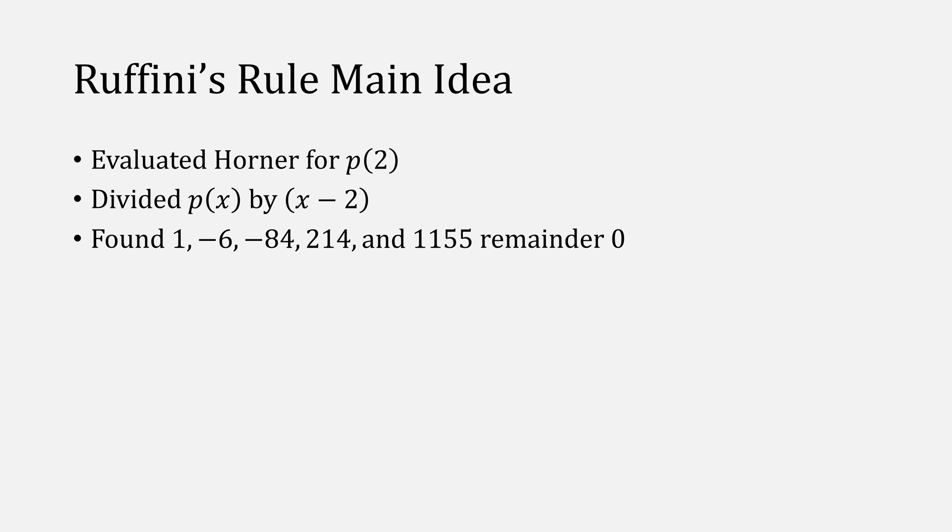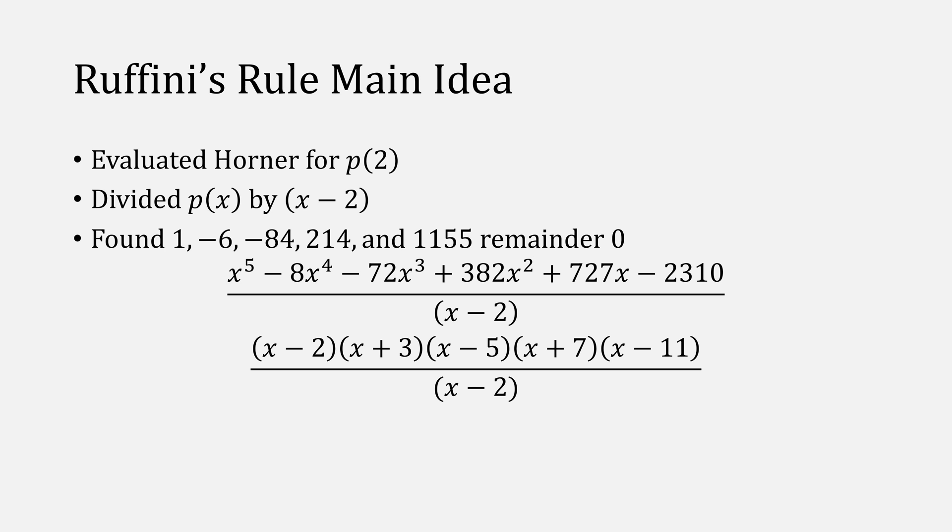This is the basis of Ruffini's rule. We evaluated a polynomial at the value of 2. What we did was essentially divide that polynomial by x minus 2, and we found these numbers. They came from this. If we took our polynomial and rewrite it in terms of its roots, we'd divide out that x minus 2, and we're left with these values, which we can expand to be the quotient that we found.